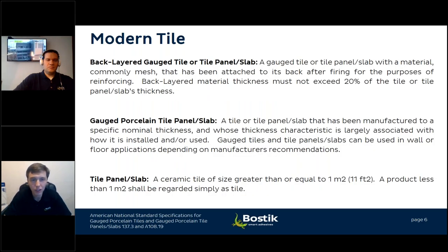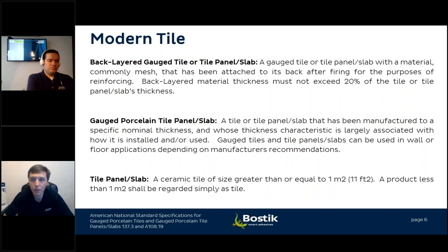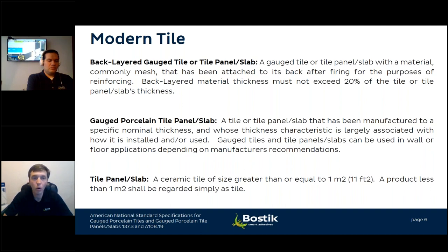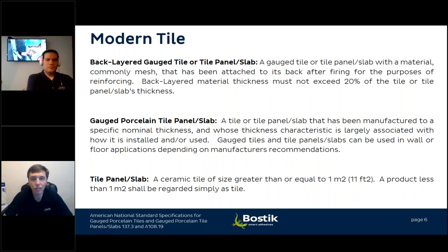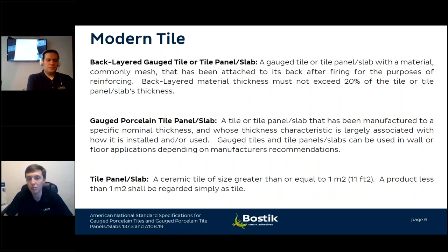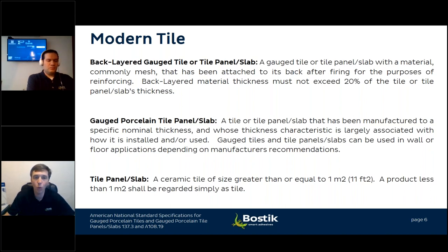ANSI 137.3 provides standard definitions for gauged porcelain tile panels. A back-layered gauged porcelain tile or panel slab is defined as a gauged tile or panel slab with a material — generally mesh — attached to the back after firing for reinforcement purposes. By definition, these back-layered materials must not exceed 20% of the tile or panel slab's thickness, driving the need for higher-performance bonding materials.